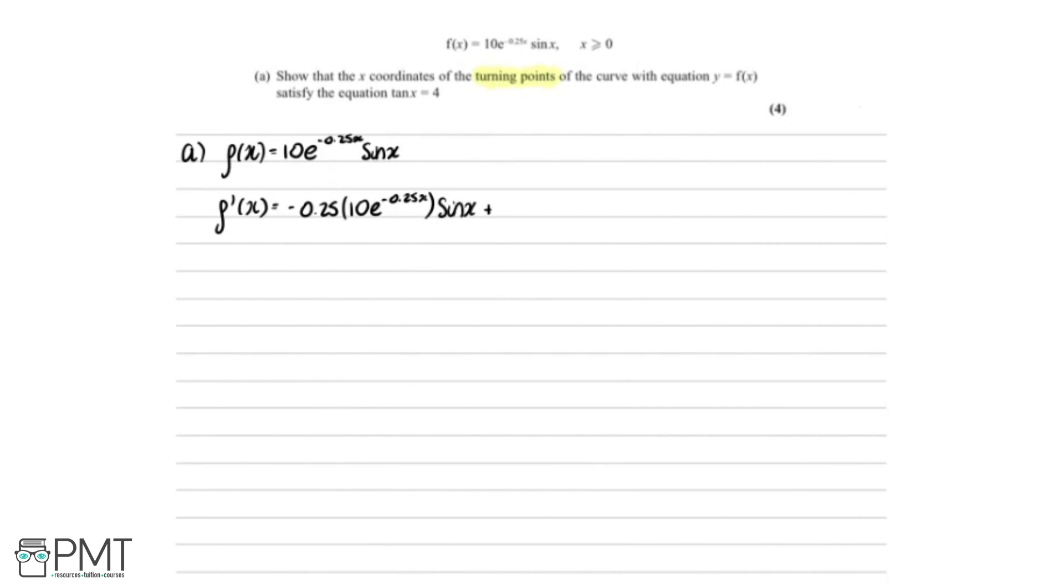And then adding on to that, we now need to do it the other way around. So we differentiate the sin x, so you get cos x. And then we hold or keep the same the other part. So that's just 10e^(-0.25x).